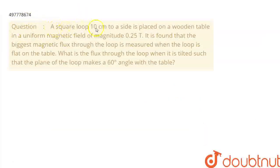Hello friends, the question is: A square loop 10 cm of a side is placed on a wooden table in a uniform magnetic field of magnitude 0.25 tesla. It is found that the biggest magnetic flux through the loop is measured when the loop is flat on the table. What is the flux through the loop when it is tilted such that the plane of the loop makes a 60 degree angle with the table?